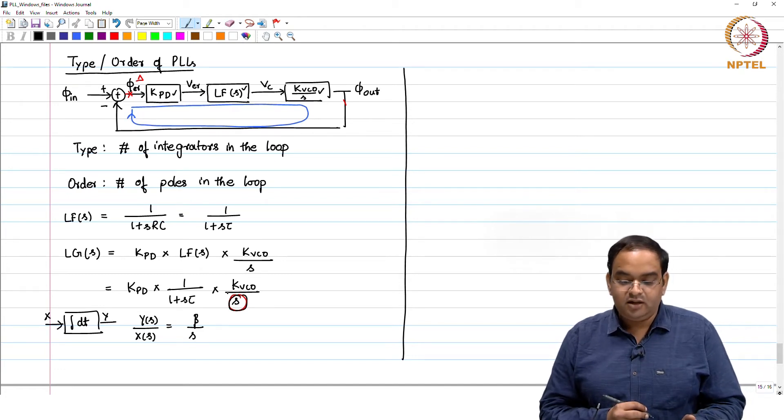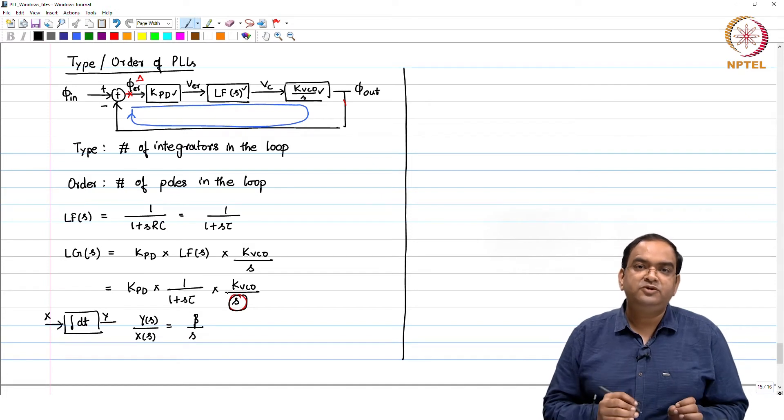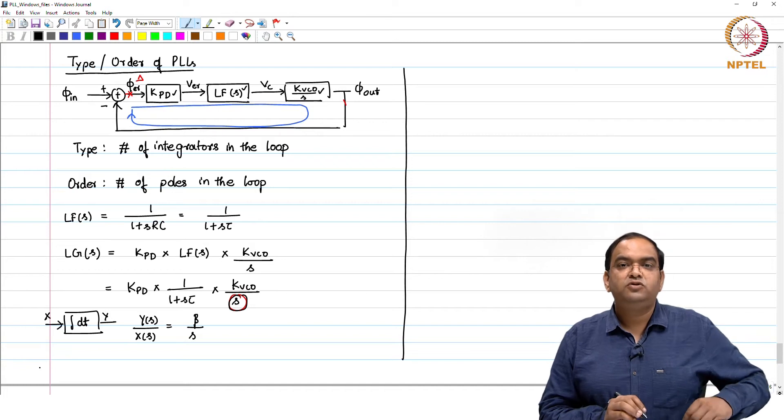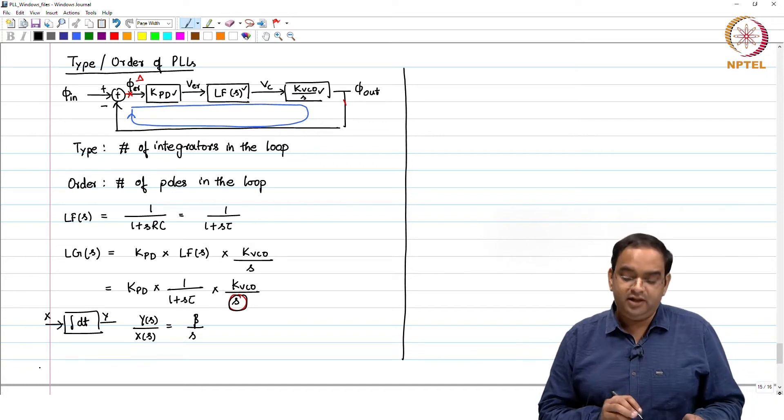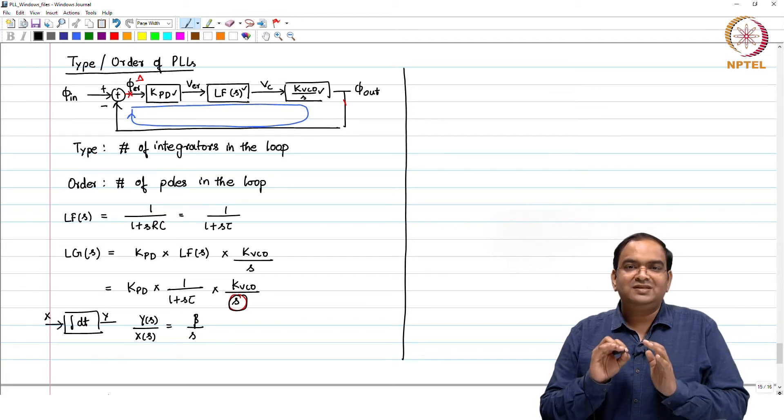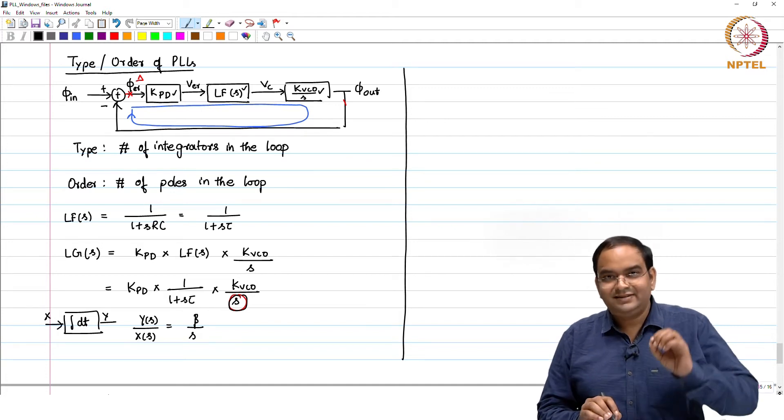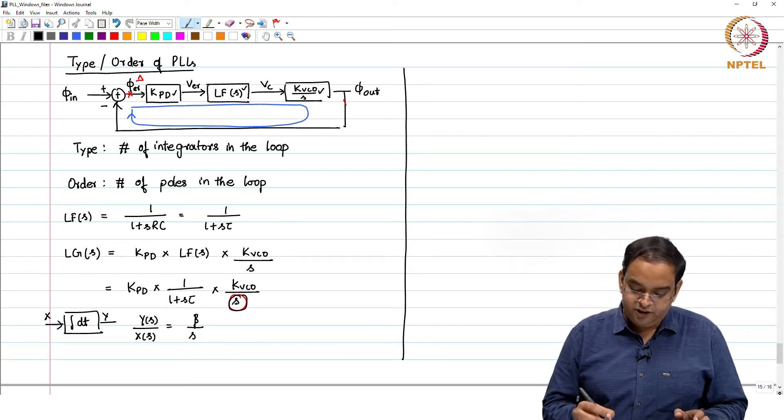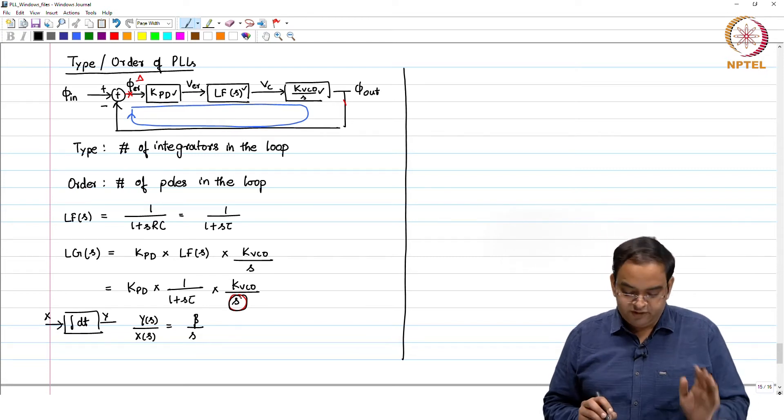Where does this integrator come from? This integrator comes from our voltage control oscillator where you change the frequency of the oscillator and by changing the frequency you change the phase. This integrator is inherent to our PLL block. One integrator is always present.